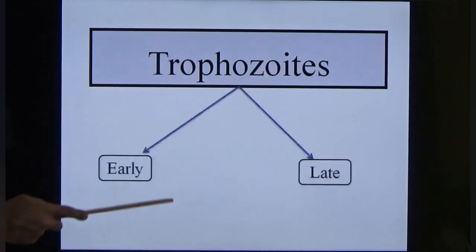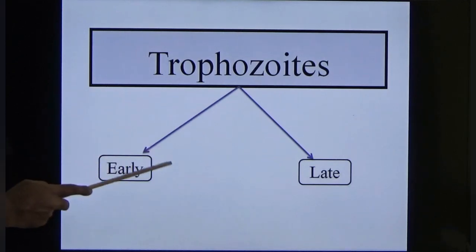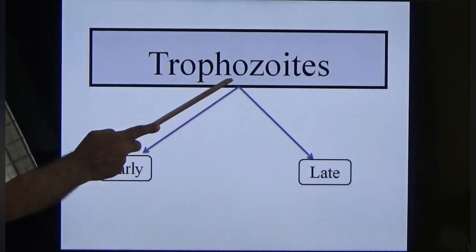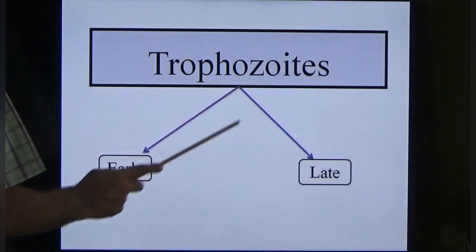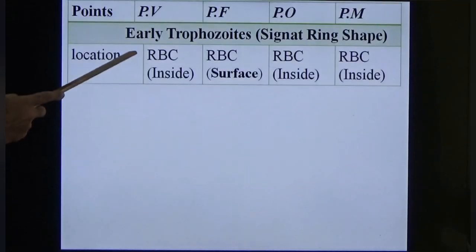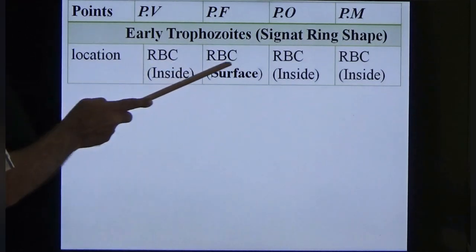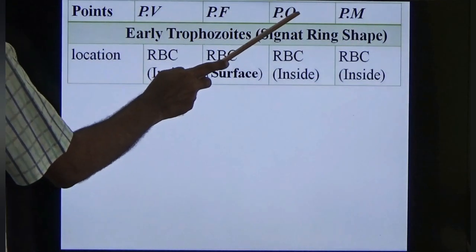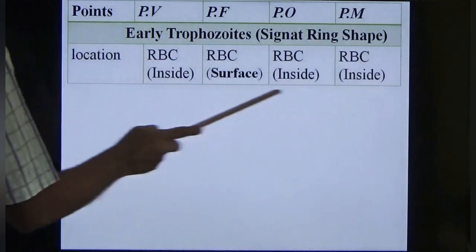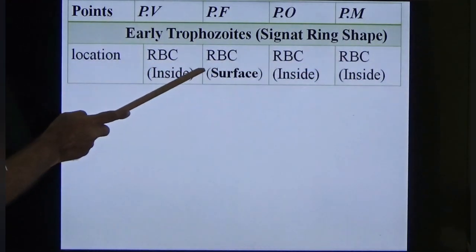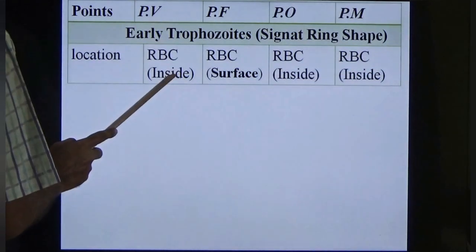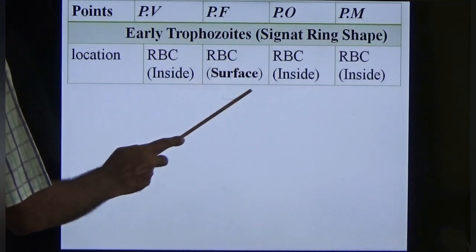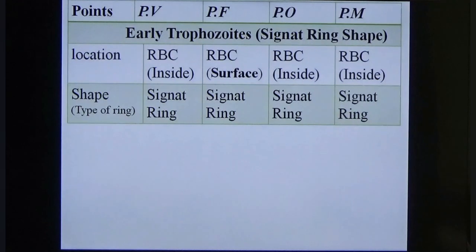First we will study the trophozoite, divided into early and late trophozoite. All forms develop in the RBC. Location for all four parasites is inside the RBC. Plasmodium vivax, ovale and malariae are present inside the RBC, whereas Plasmodium falciparum is present both inside and on the surface (membrane) of the RBC.